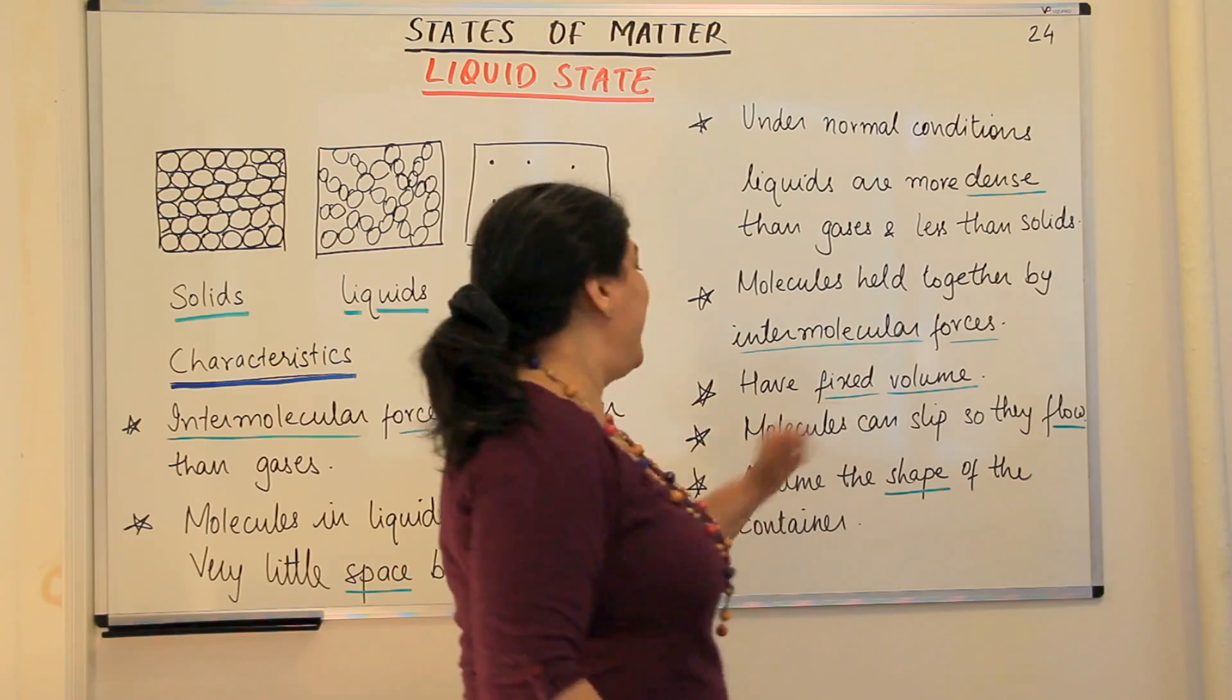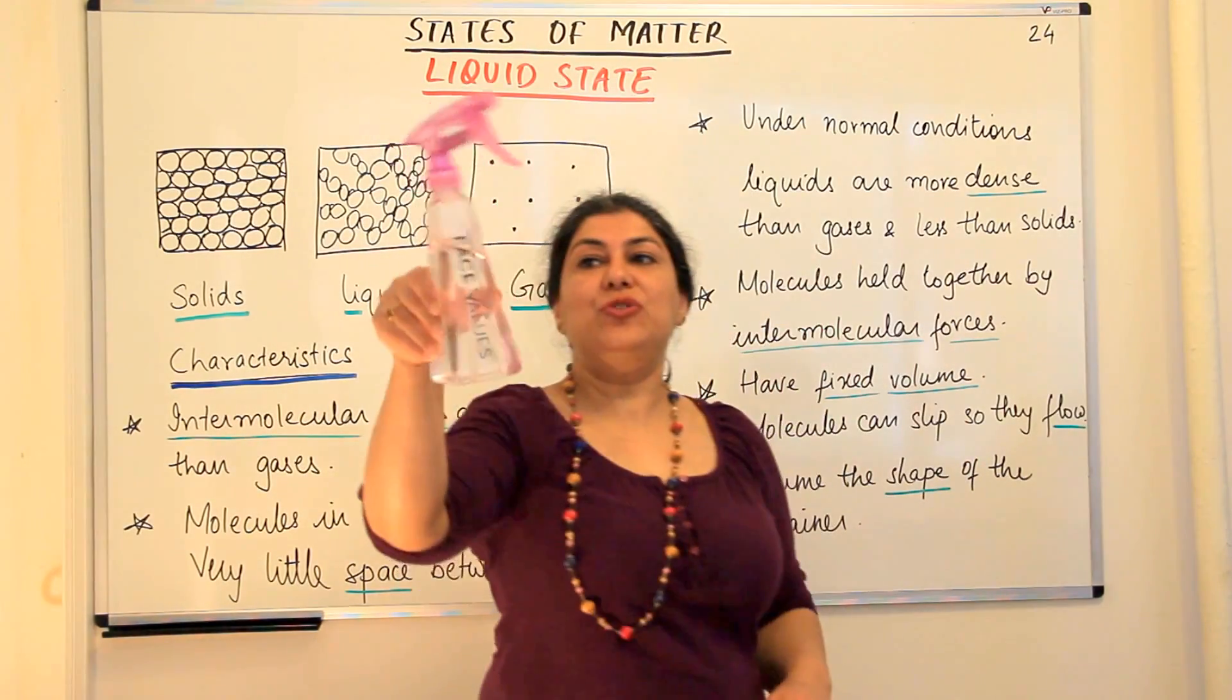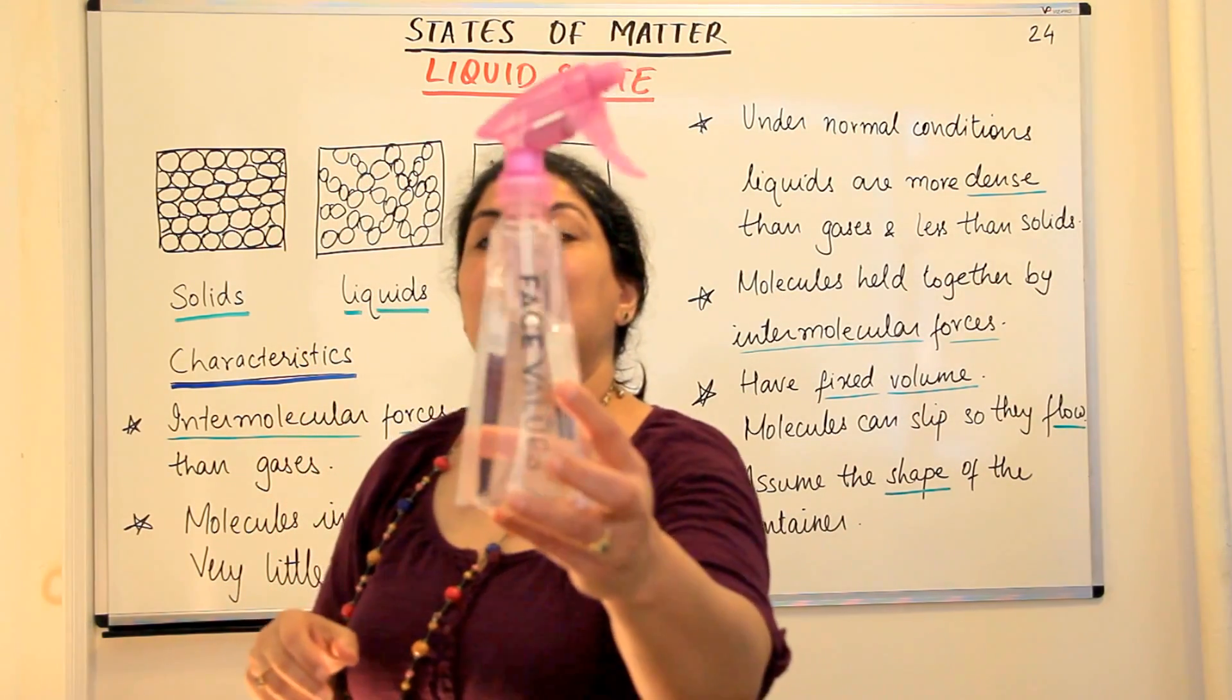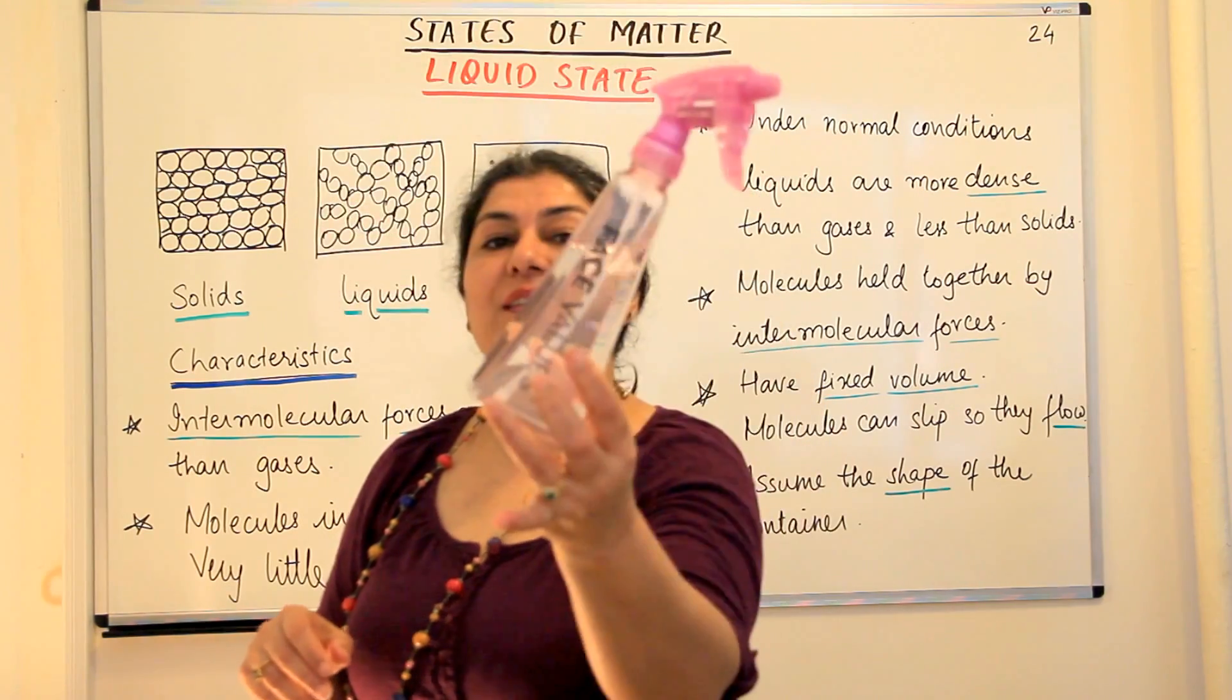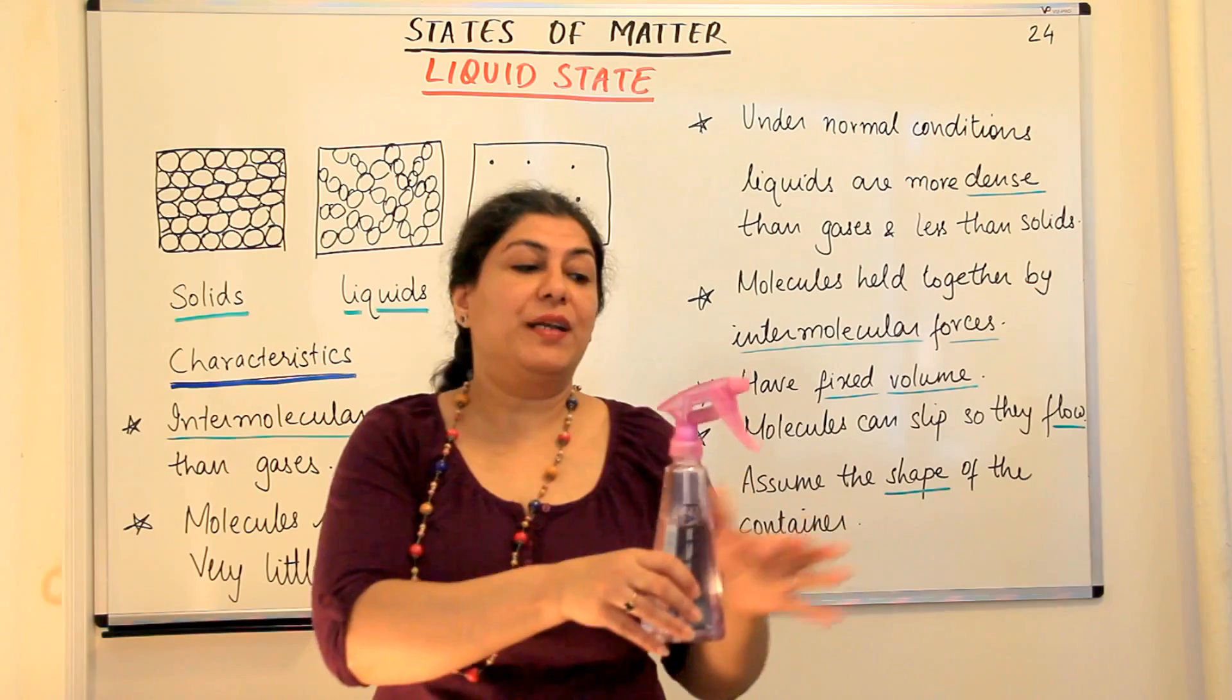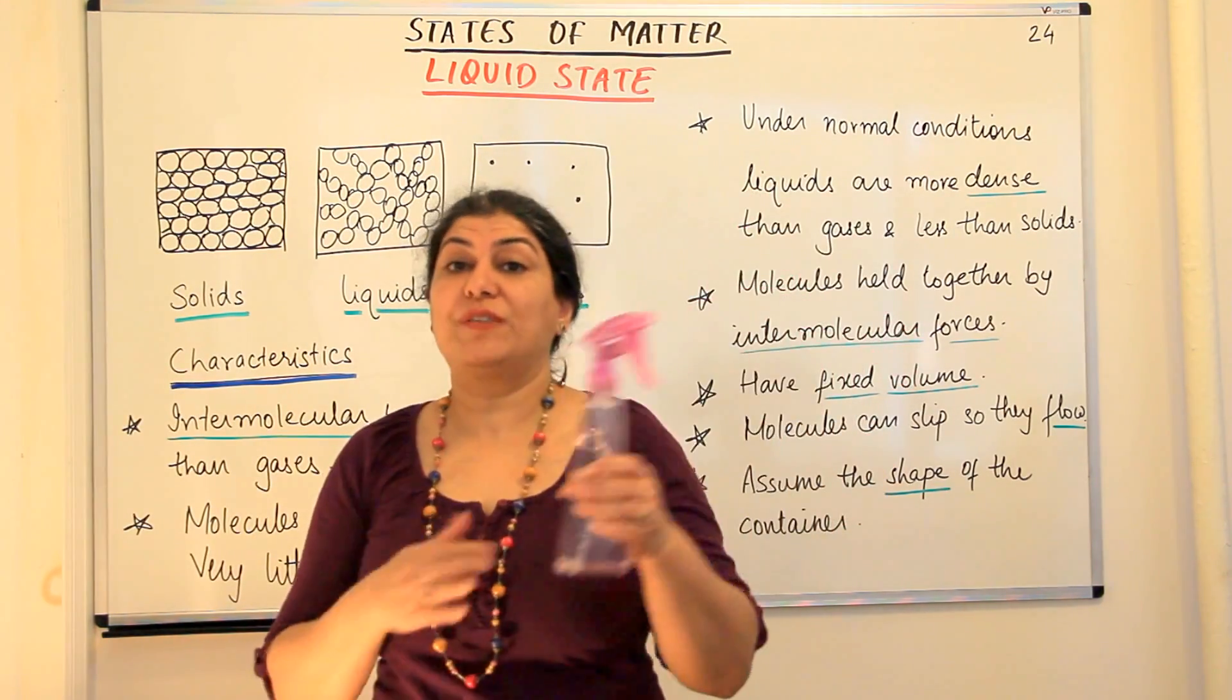So liquids have a fixed volume and molecules can slip and slide. They can move, and constantly as they move the shape of the liquid changes. It acquires the shape of the container. If I pour this water into another jar it will acquire the shape of that container whatever I've poured it in.